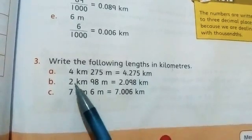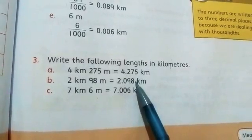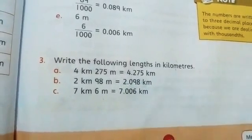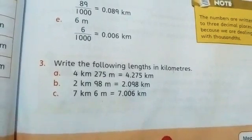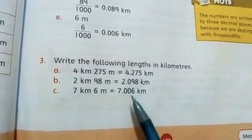Same here. 2 kilometers 98 meters - how will you write it? 2.098, because we have 4 digits here. If you remember that 1 kilometer is 1000 meters, then you need 4 digits. Then the answer will be okay.